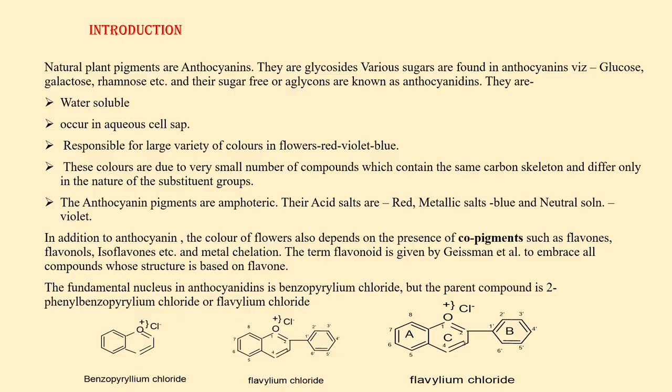Natural plant pigments are anthocyanins. They are glycosides. Various sugars are found in anthocyanins such as glucose, galactose, rhamnose, etc. Their sugar-free forms or aglycones are known as anthocyanidins. They are water-soluble, occur in aqueous cell sap, and are responsible for a large variety of colors in flowers, which is pH-based.